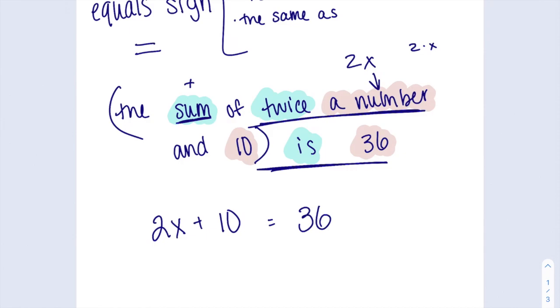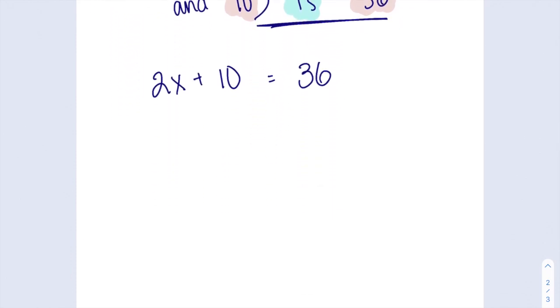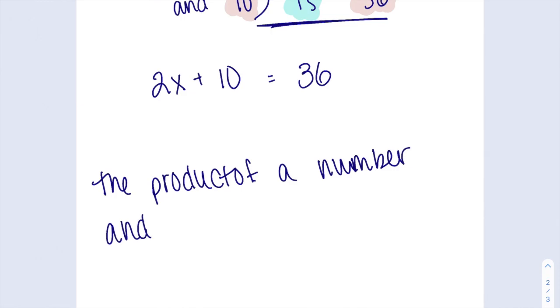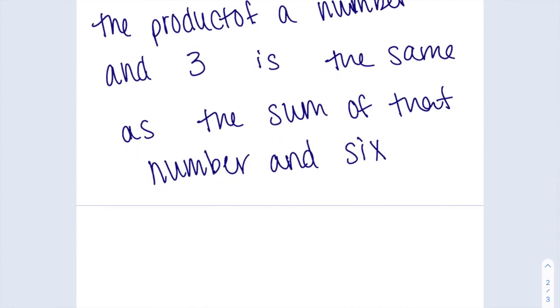The next problem I'm going to throw your way is going to be, let me think, the product of a number and 3 is the same as the sum of that number and 6. Usually I write these out beforehand, but today I just decided not to. So let me read this again. The product of a number and 3 is the same as the sum of that number and 6.